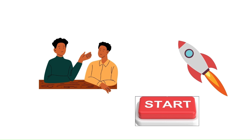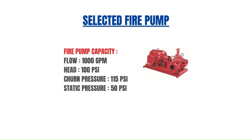Let us consider one example with a selected fire pump having a capacity of 1000 gpm at 100 psi, with a churn pressure of 115 psi. The static pressure available at the pump suction is 50 psi. Based on this data, we are going to determine the pressure settings for this particular pump.